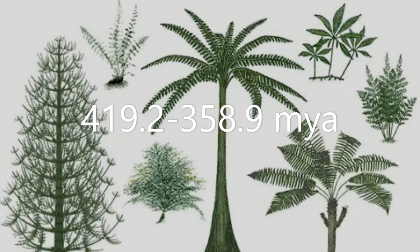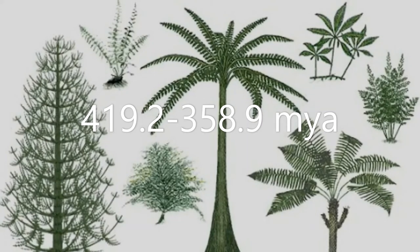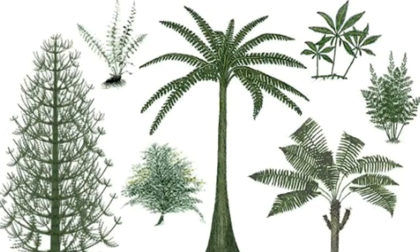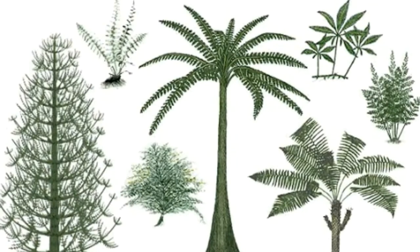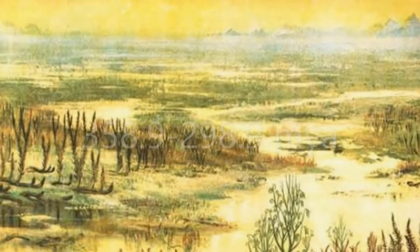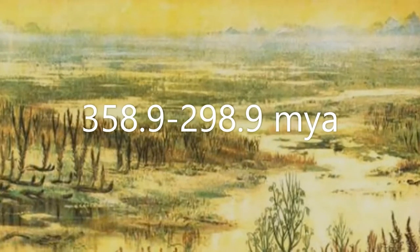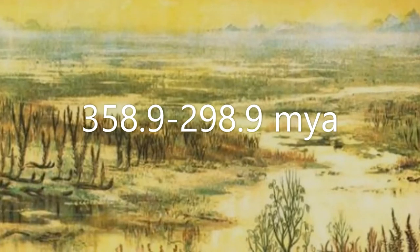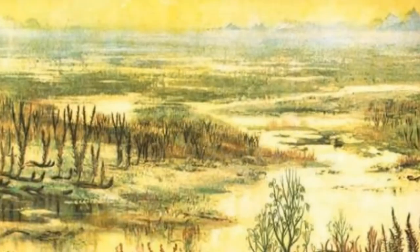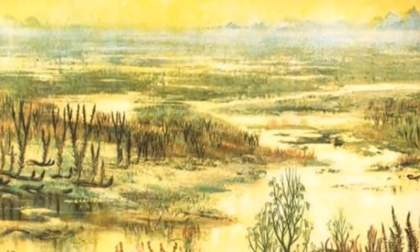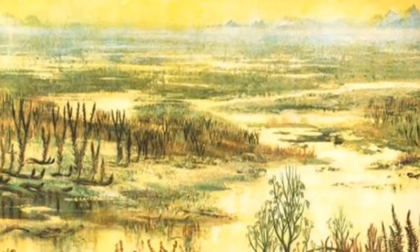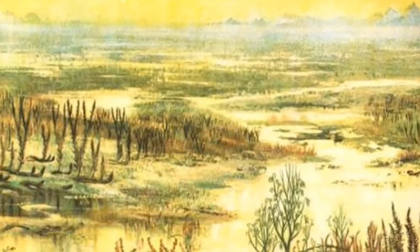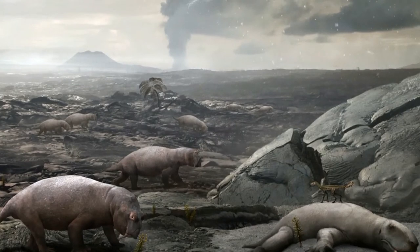After this was the Devonian Period, from 419.2 to 358.9 million years ago. It saw the rise of terrestrial reptiles and arthropods; however, fish were still more dominant.